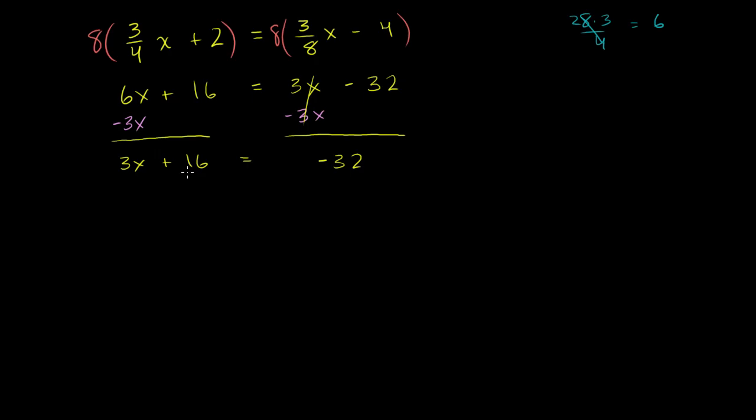Now let's get rid of the 16 from the left-hand side. So to get rid of it, we're going to subtract 16 from both sides of this equation. Subtract 16 from both sides. The left-hand side of the equation just becomes, you have this 3x here. These 16's cancel out. You don't have to write anything. Is equal to negative 32 minus 16 is negative 48.